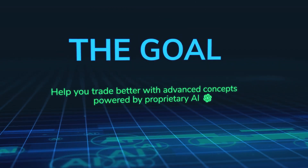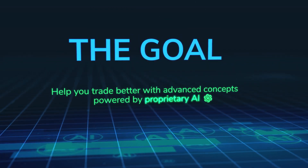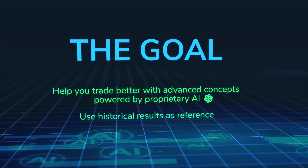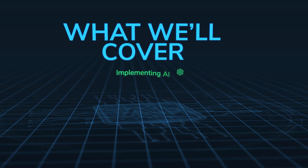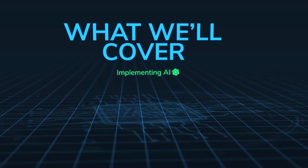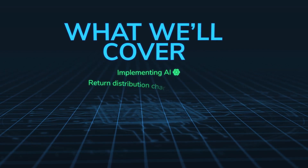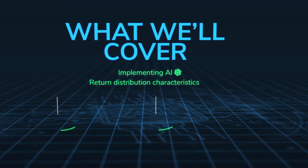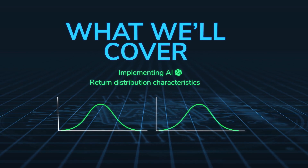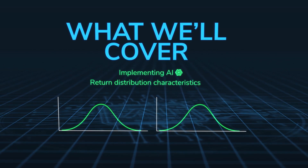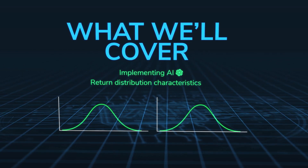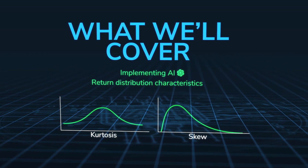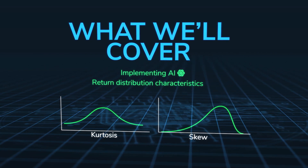To help you trade better by using advanced statistical concepts and implementing them directly into trading, we will use historical results. We're going to be implementing AI — several different types. We will talk about return distribution characteristics designed for those who have no experience in statistics at all, covering specific use cases including kurtosis and skew — you don't have to know what those are — and why that matters.